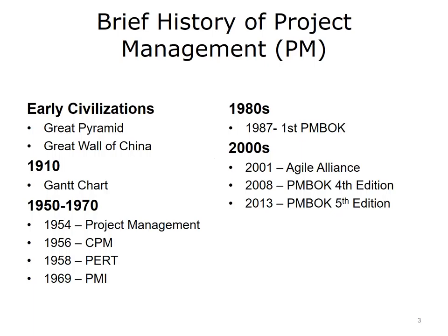In the same year, the U.S. Navy created the Program Evaluation and Review Technique, or PERT, to help manage its Polaris Missile Submarine Program. Around the same time, the DuPont Corporation developed its Critical Path Method, usually referred to as CPM, as a project management tool for scheduling various processes or activities. Eventually, PERT was adapted to employ a Work Breakdown Structure, or WBS, which we discuss in other units of this course.